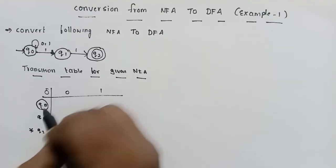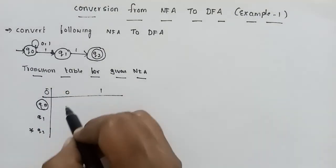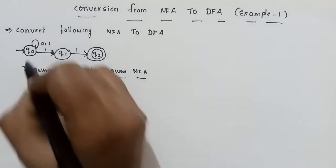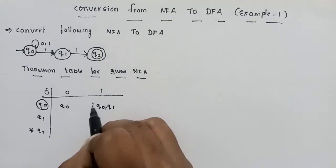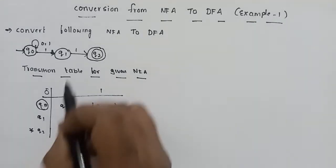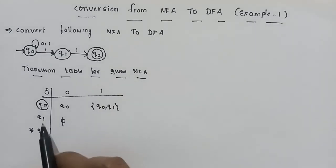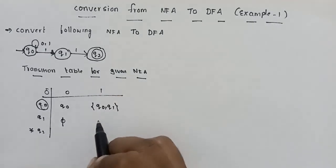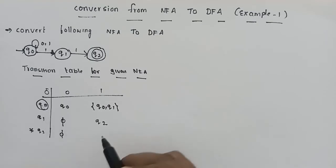Q0 is the initial state. Q0 on input 0 goes to Q0. Q0 on input 1 goes to two states: Q0 and Q1. Q1 on input 0 has no next state (empty/dead state). Q1 on input 1 goes to Q2. Q2 on input 0 is empty, and Q2 on input 1 is also empty.